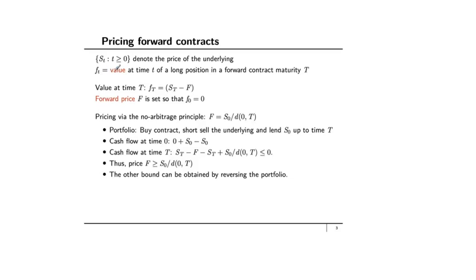What is the value of this contract at time capital T? At time t=0 the contract is written; at time capital T it matures, and you can purchase the underlying at price F. If S_T is the price of the underlying at time capital T, then the value of holding the contract is simply S_T minus F — you purchase at price F and sell in the spot market at S_T. The forward price F is set at t=0 such that the value of the contract at t=0 is exactly zero. Both buyer and seller value the contract at zero, and once you set this condition, you can price F using an arbitrage argument.